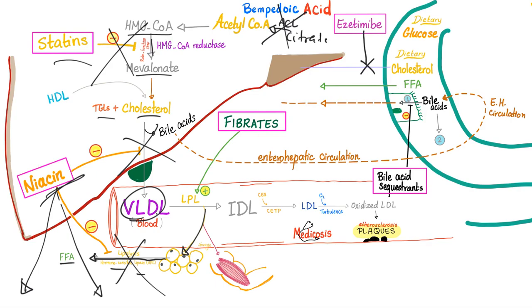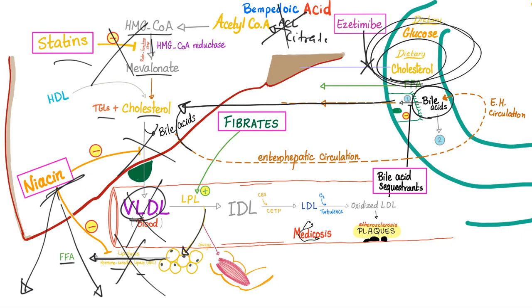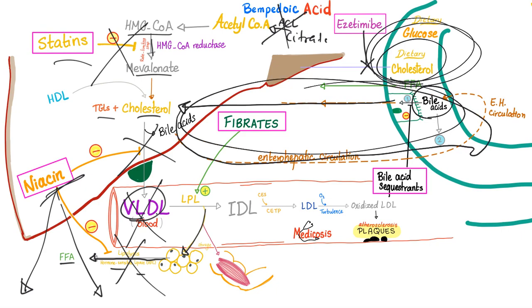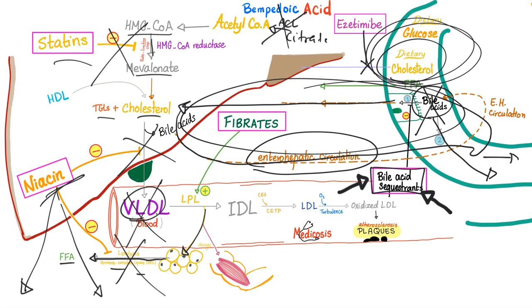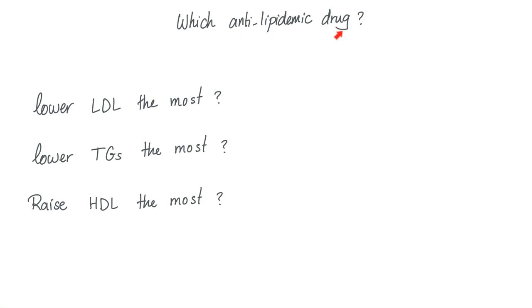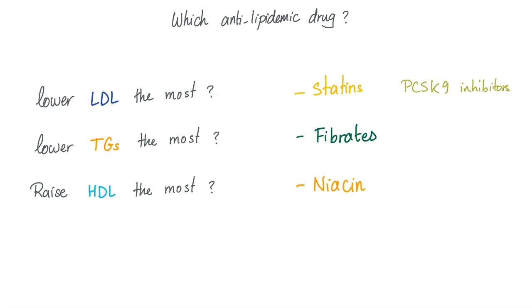Bile acids circulate in enterohepatic circulation between the liver and small intestine. Bile acid sequestrants such as cholestyramine trap bile acids in the gut so they end up in feces. Key comparisons for your exam: which drug lowers LDL the most, which lowers triglycerides the most, and which raises HDL the best?